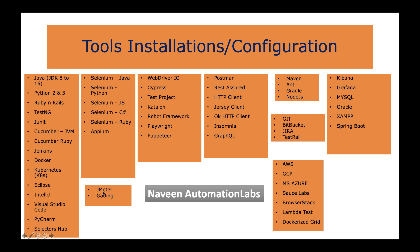Then we have JMeter, Gatling, and then different tools available in the market like WebdriverIO, Cypress, TestProject, Katalon, Robot Framework, Playwright, Puppeteer — and maybe we can add more products and libraries later on as well.